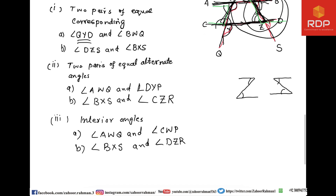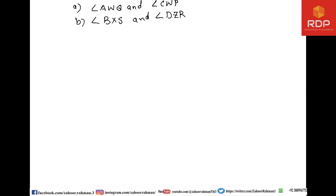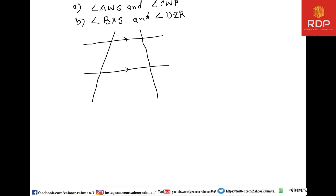Now redrawing the figure with the parallel lines and the two transversal lines for part B. Labels: AB, CD, and intersection points W, X, Y, Z. The question asks whether angle BWQ is equal to angle AXR.